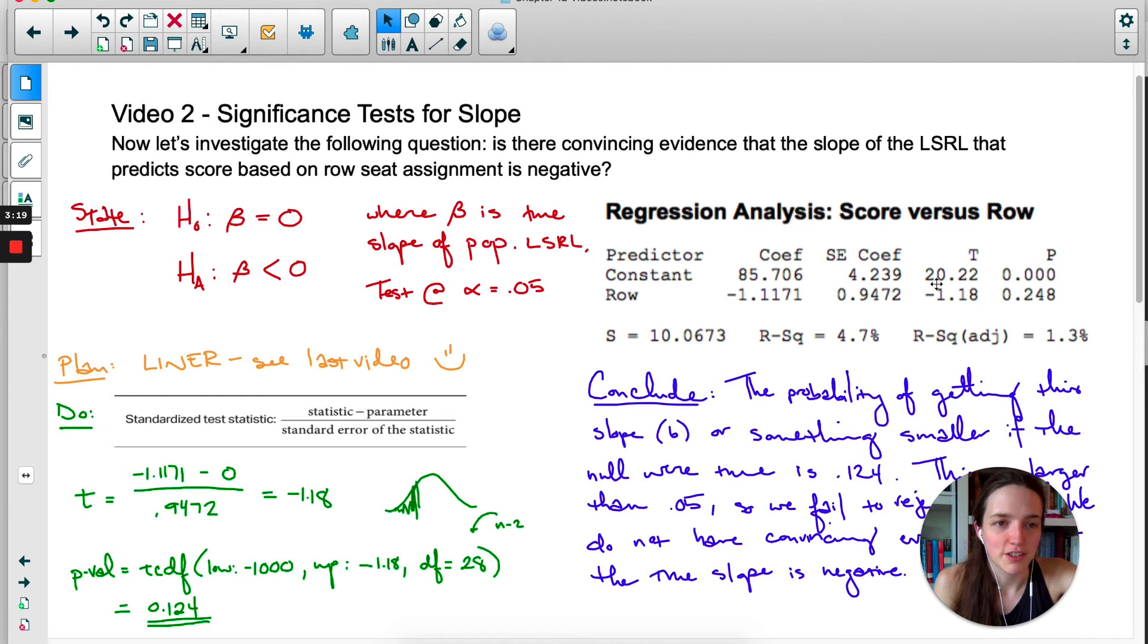This over here should look familiar. We did get a t-value of negative 1.18, like right there, and this p-value looks almost familiar. If you double our p-value, you get 0.248.